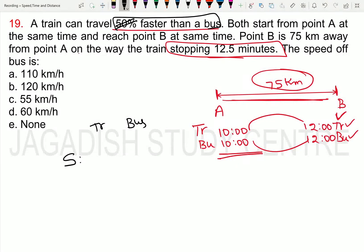50% is nothing but one-half, so the ratio is 3 to 2. The train has 3 unit speed and the bus has 2 unit speed.